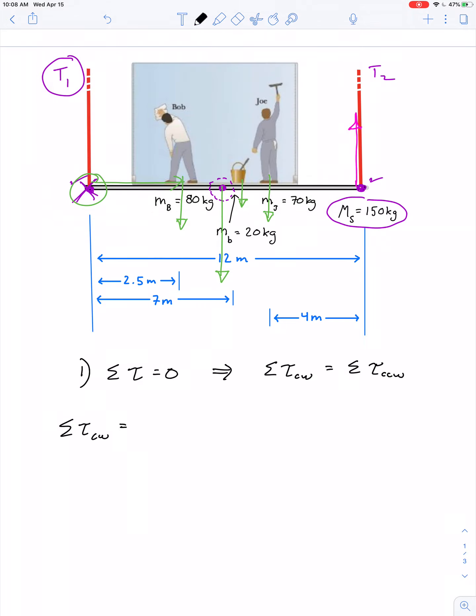Total clockwise torque: that's going to be the mass of Bob times gravity times the distance Bob stands from the axis of rotation (r_b). The angle between the lever arm and the force vector is 90 degrees for all our force vectors, so I'm going to leave out sine of the angle. There's one of your clockwise torques.